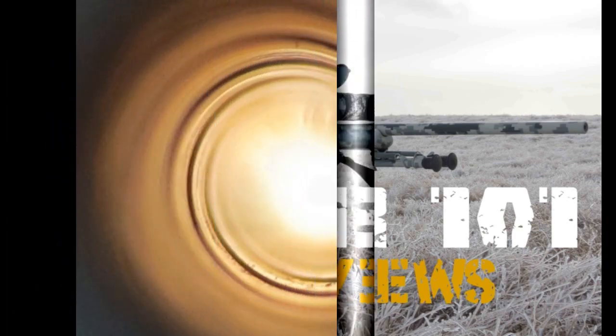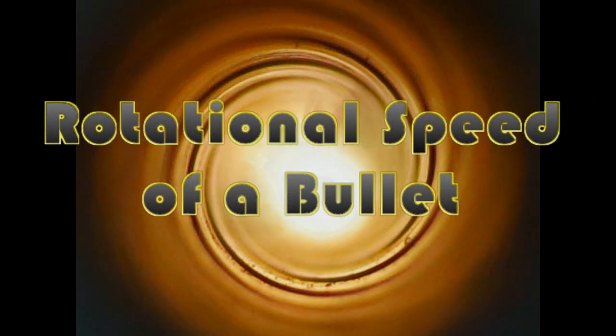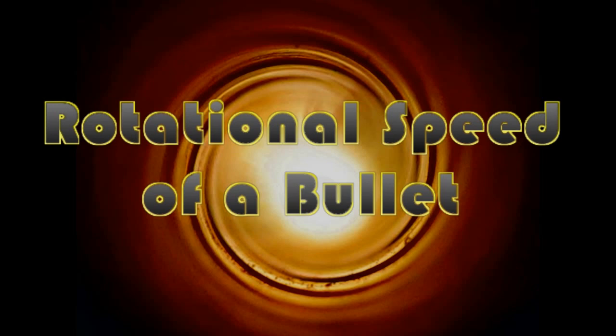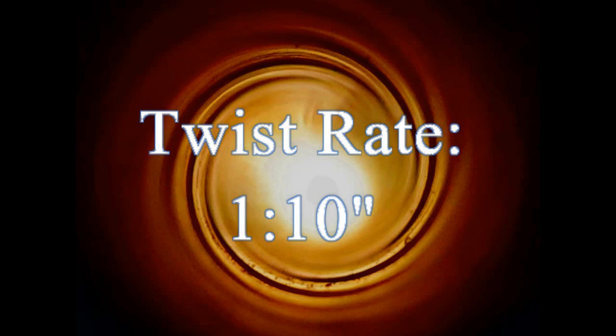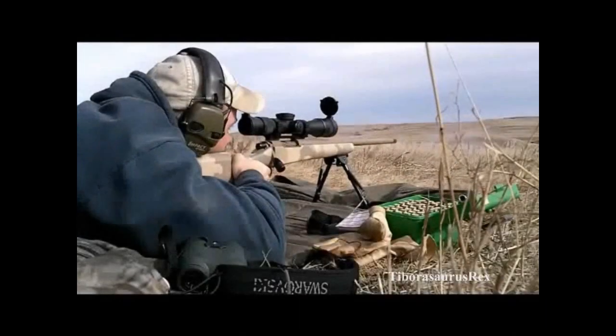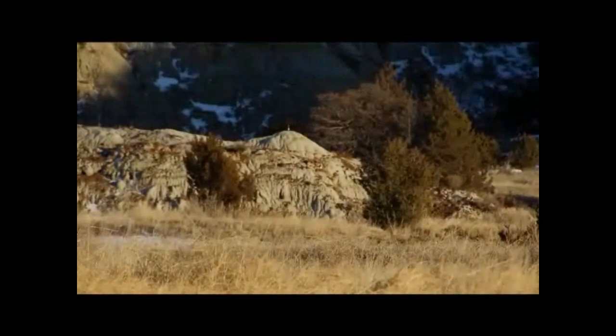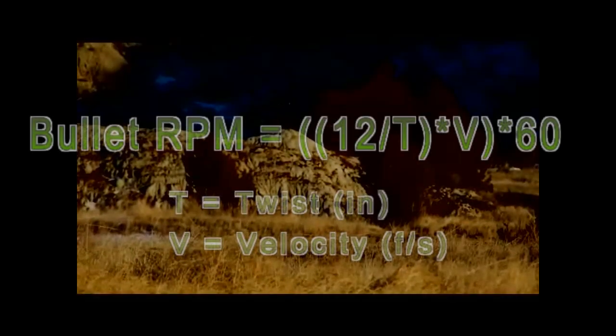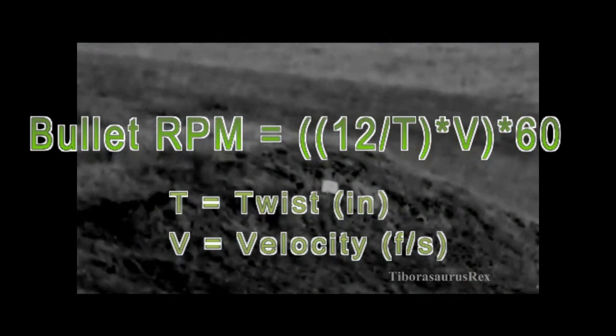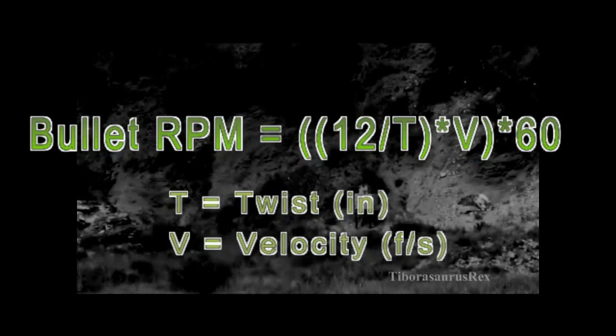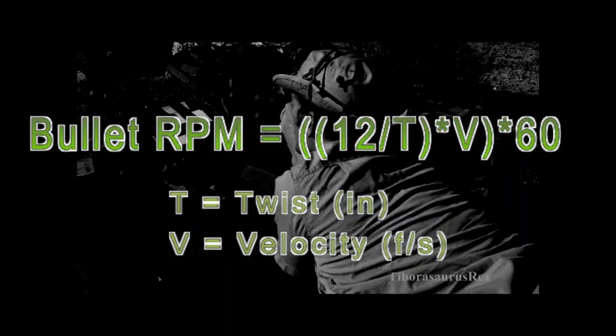One of the first things to get a handle on is the rotational speed of a bullet — how many RPMs are those things spinning at? With typical rifling, say one-in-ten, the bullet turns once every ten inches. If it's going three times the speed of sound, that's a ridiculous number of RPMs. Here's the formula to figure that out: take 12 divided by your twist rate in inches, times your velocity in feet per second, times 60 — and that gives you revolutions per minute.